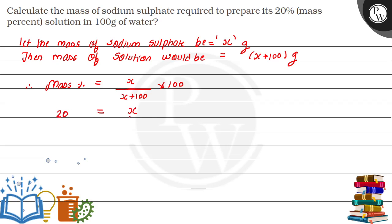So we will take X plus 100 to the other side, which gives us 20(X+100) = 100X. This becomes 20X + 2000 = 100X, so 2000 = 100X - 20X.